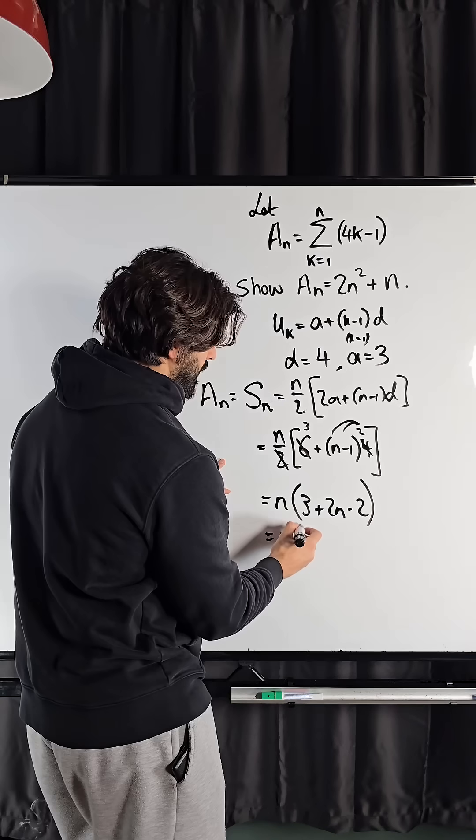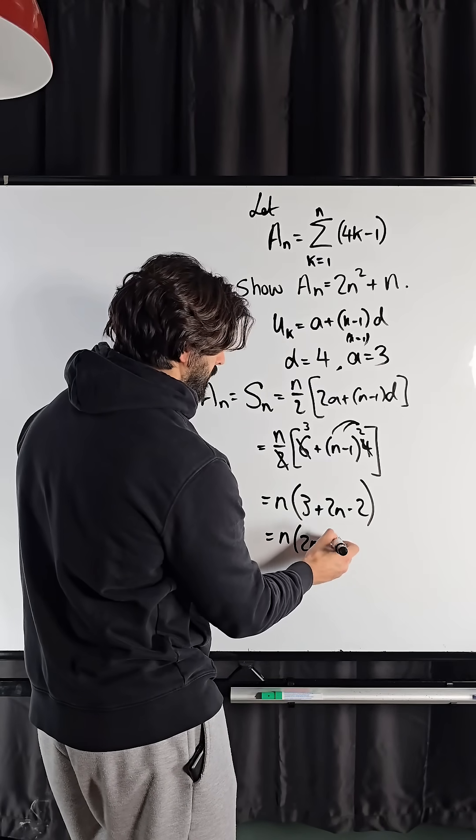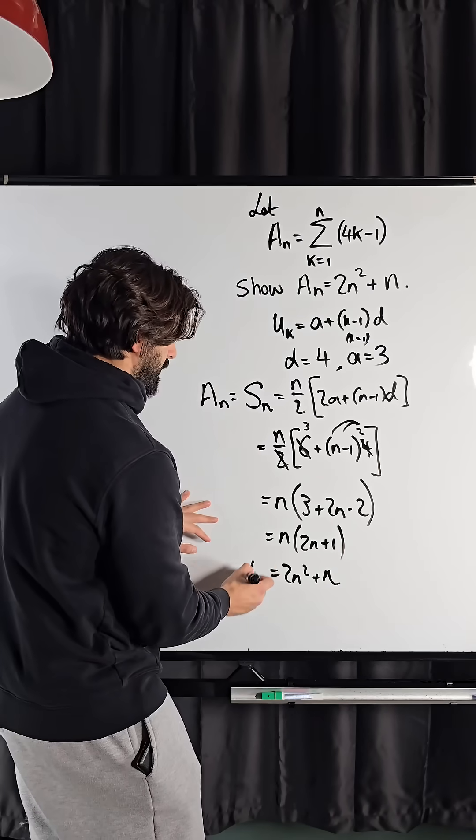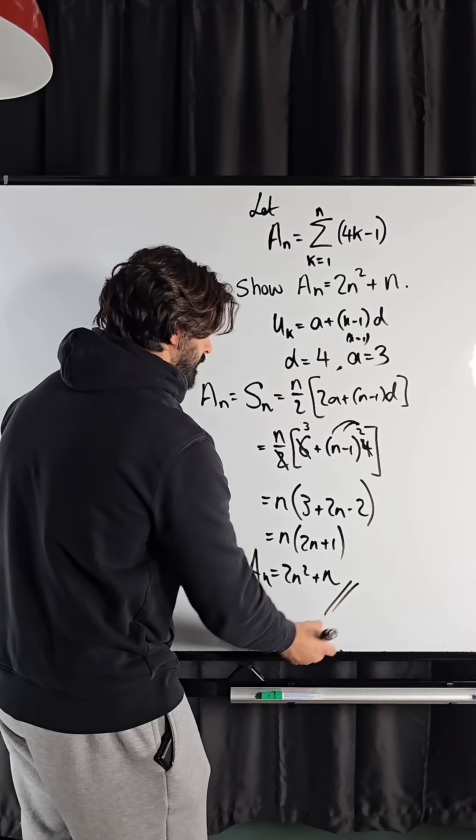Which when we simplify that is 2n plus 1, which when we expand, we get 2n squared plus n. And that, my friends, is our A_n.